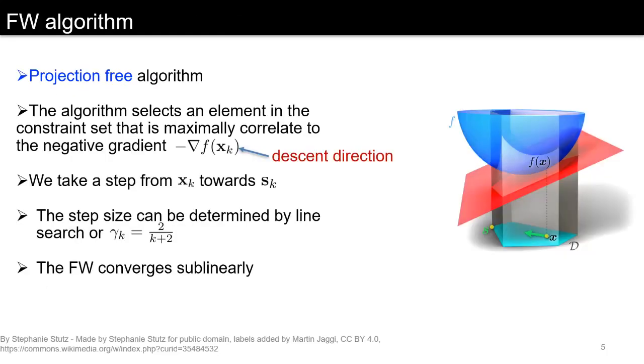The Frank-Wolfe algorithm is a projection-free algorithm. In the linear program, the algorithm selects an element in the constraint set that is maximally correlated to the negative gradient, meaning we move in the descent direction. We take a step from x^k towards s^k and the step size can be determined by either a line search or a diminishing step size.